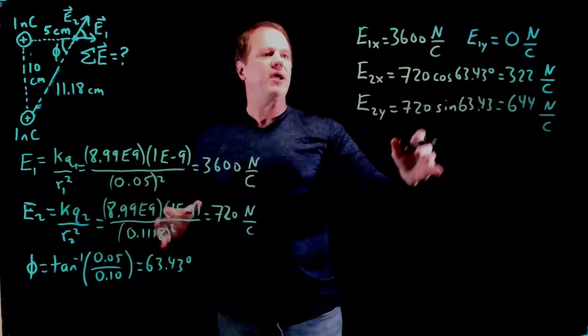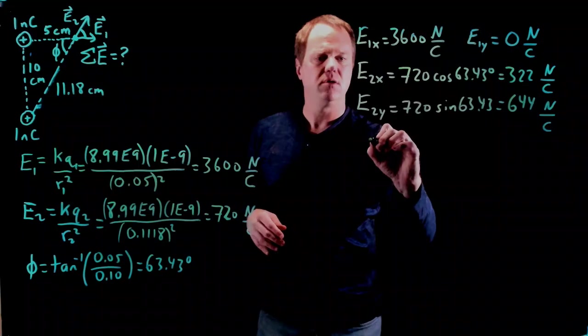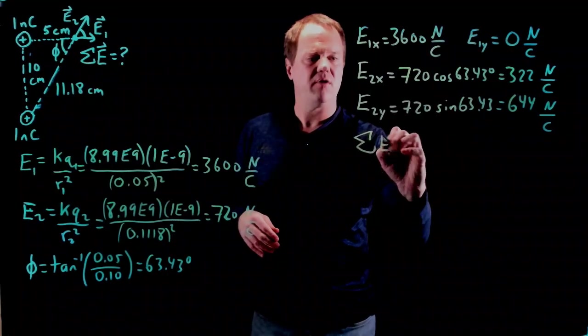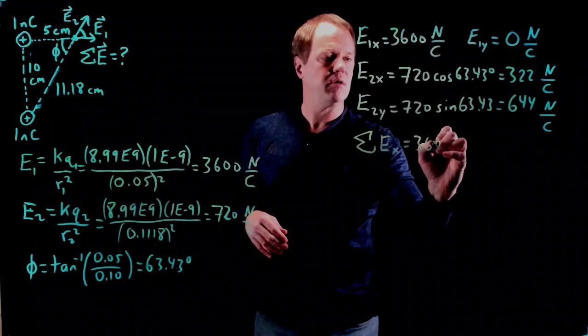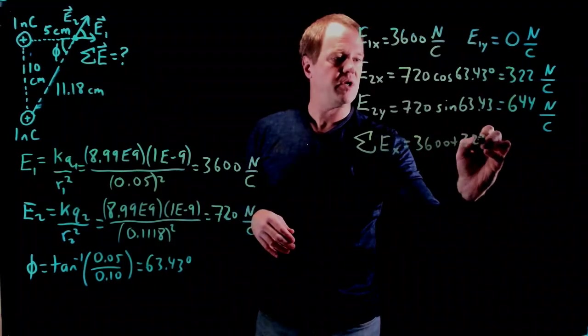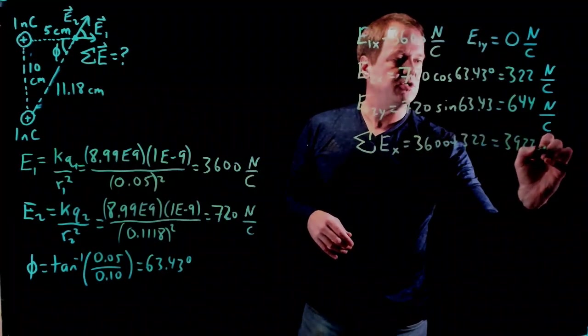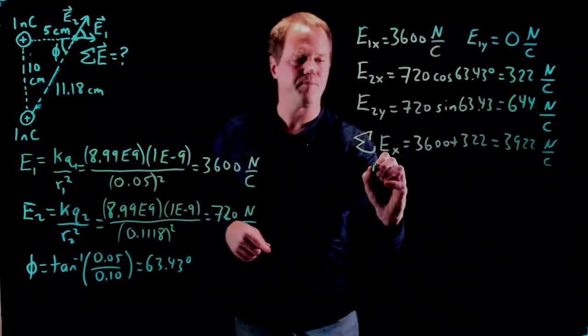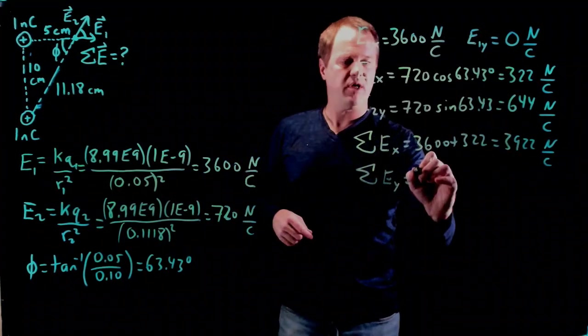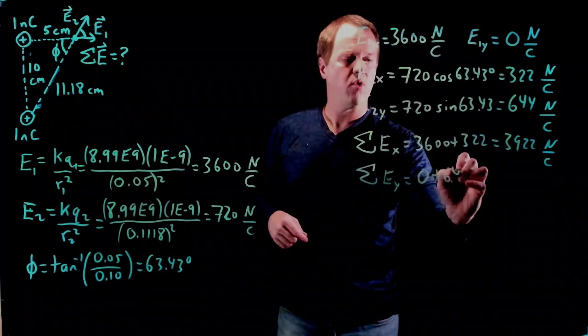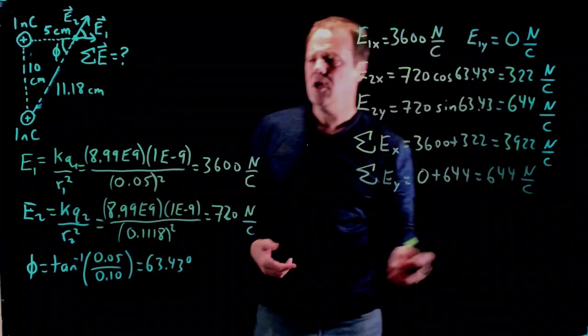So I have x and y components. Now I can add them together. I add 3600 to 322. So summation of the E's, the x components would be 3600 plus 322, giving me 3922 newtons per coulomb. And then I can also add the y components, 0 plus 644, giving me 644 newtons per coulomb.